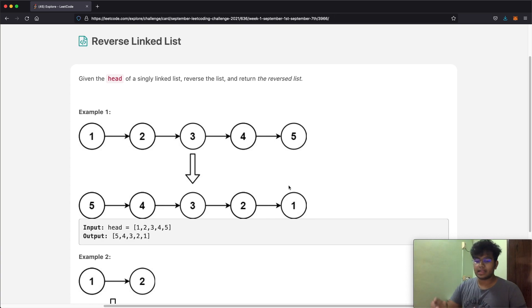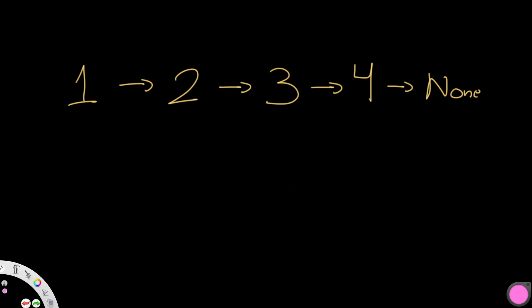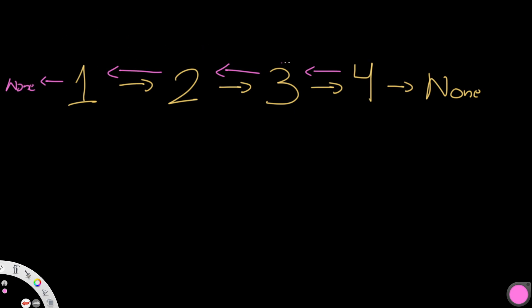So now let's see how we can actually solve this. Let's say we have one points to two, two points to three, three points to four, and four since it's the last element points to none. All we need to do is reverse it — we go to each element and point it to the previous element. Four points to three, three to two, two to one, and one is a special case: since one is now the ending, it's going to point to none.